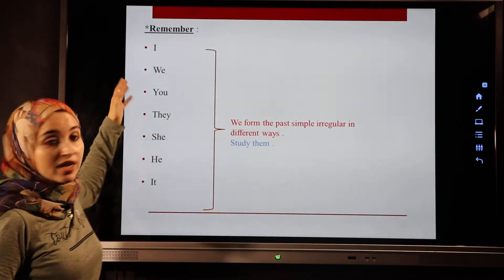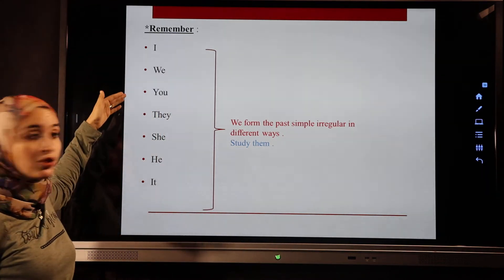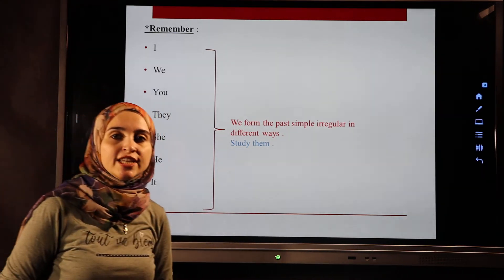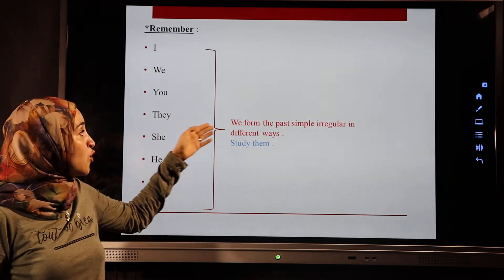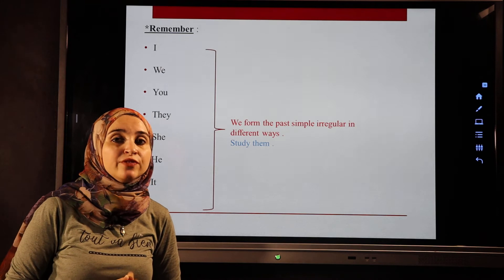So in the past simple tense irregular verbs with I, we, you, they, she, he, and it, we form the past simple irregular in different ways. We have to study them.